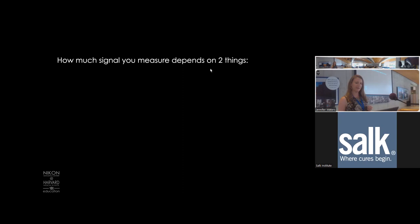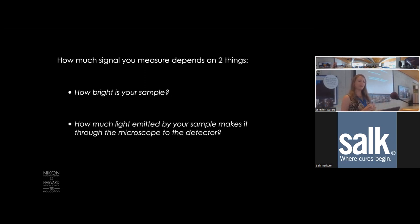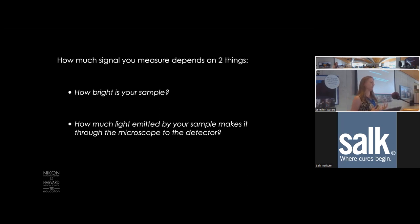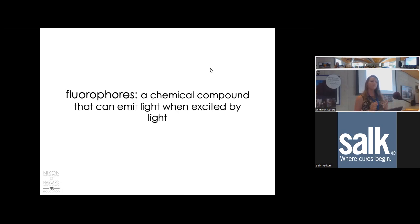How much signal you measure depends on two things: how bright your sample is—how many photons it's actually emitting—and how much of that light actually makes it through your microscope to the detector. How bright your sample is depends largely on your fluorophore. The photons you detect as signal come from fluorophores as a result of the fluorescence reaction. Fluorophores are chemical compounds that can emit light when excited by light.